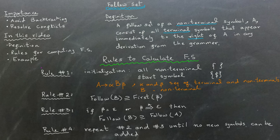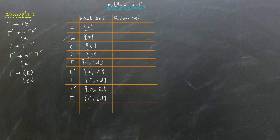These rules are all you need to determine the follow set for all non-terminals in our context-free grammar. Now let's apply these rules to a carefully chosen example to clarify the concept. In this example, we already have the first set of each terminal and non-terminal. This is the same grammar we used to calculate the first set in the previous video.